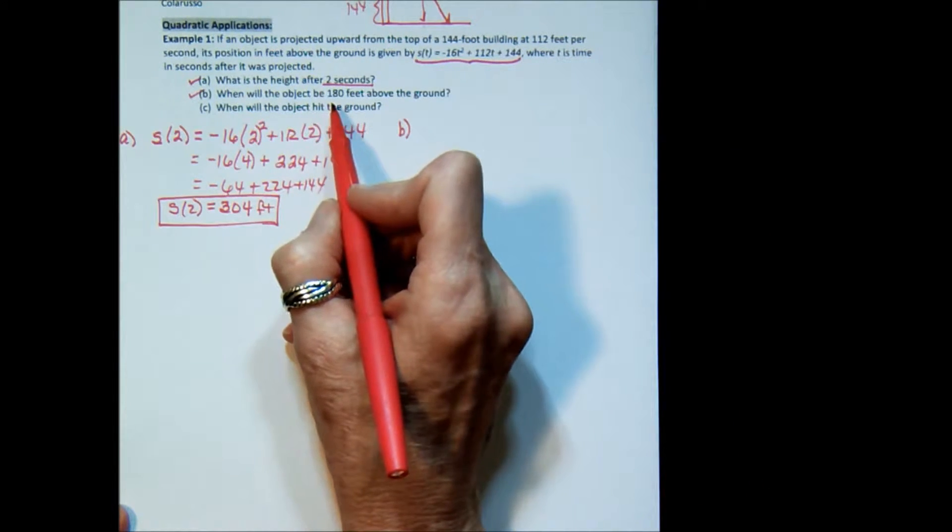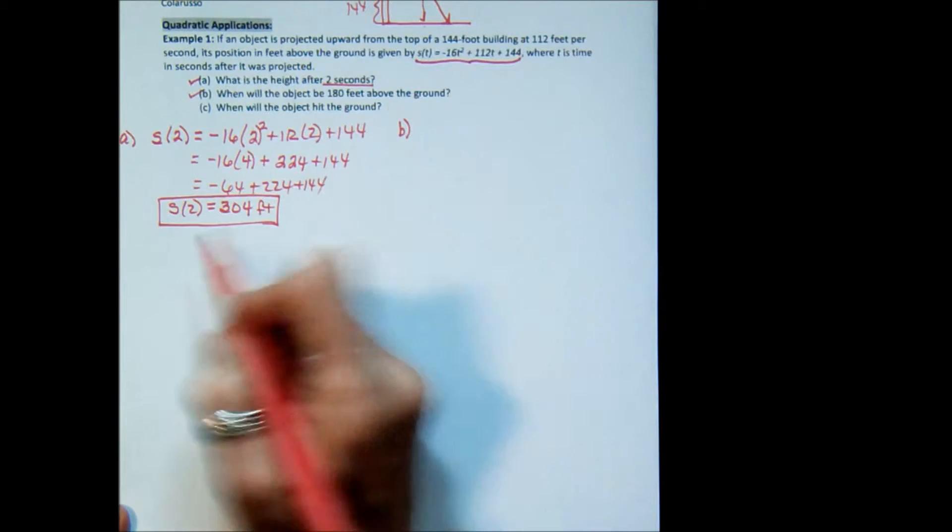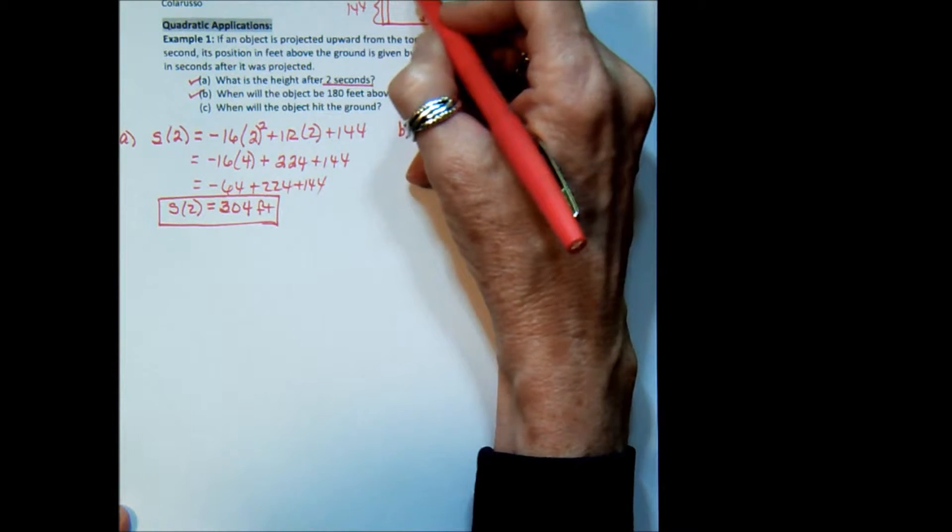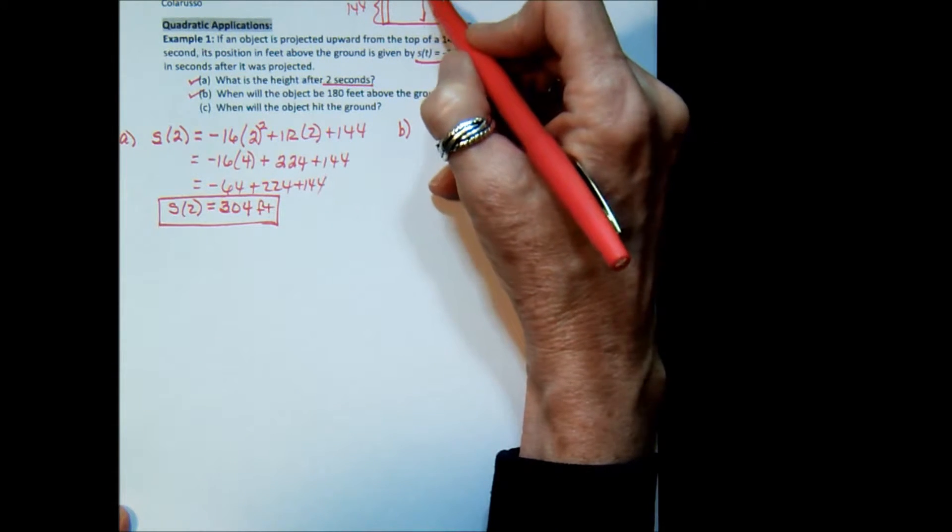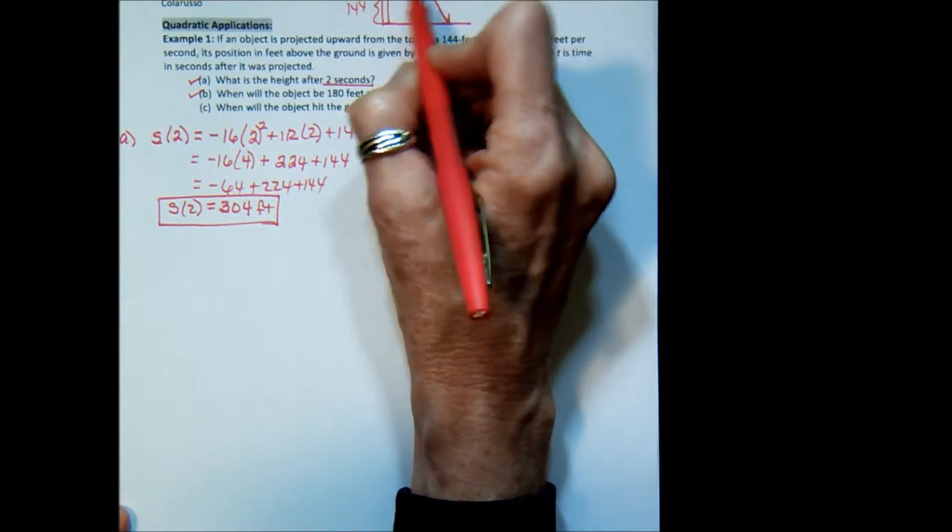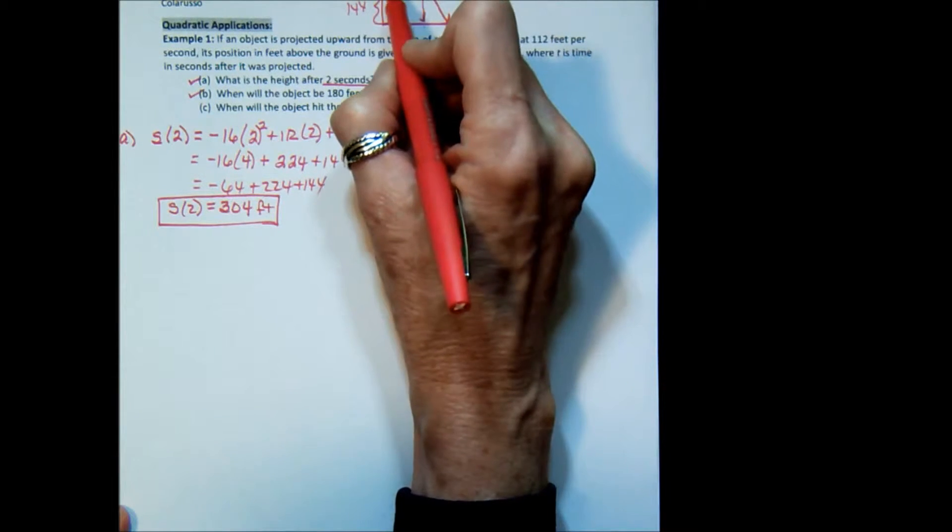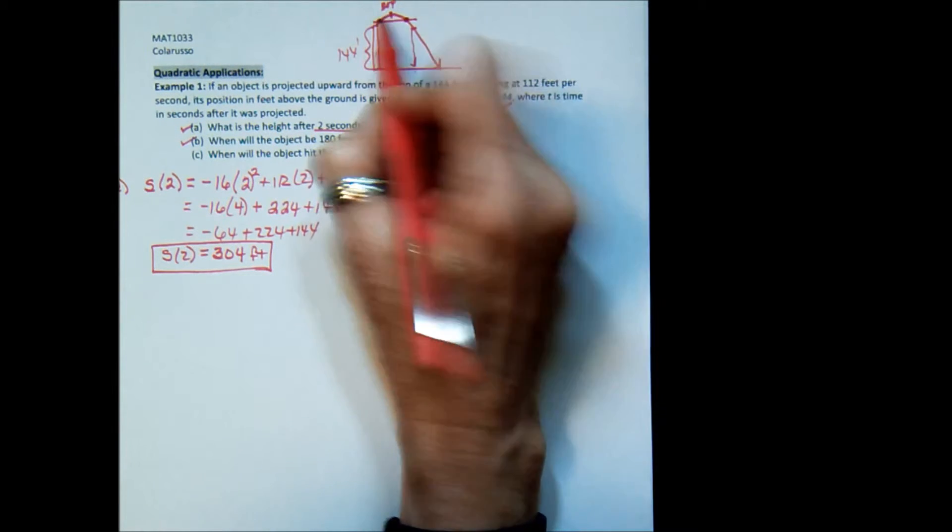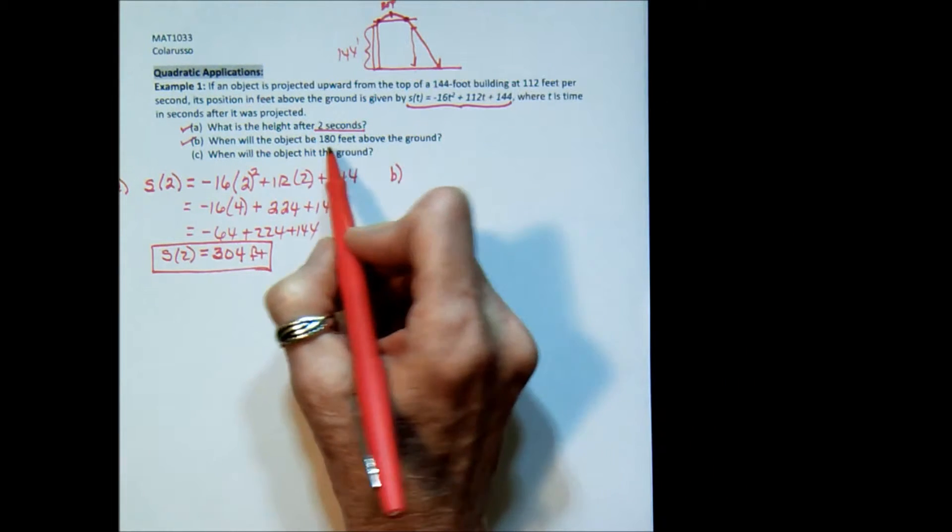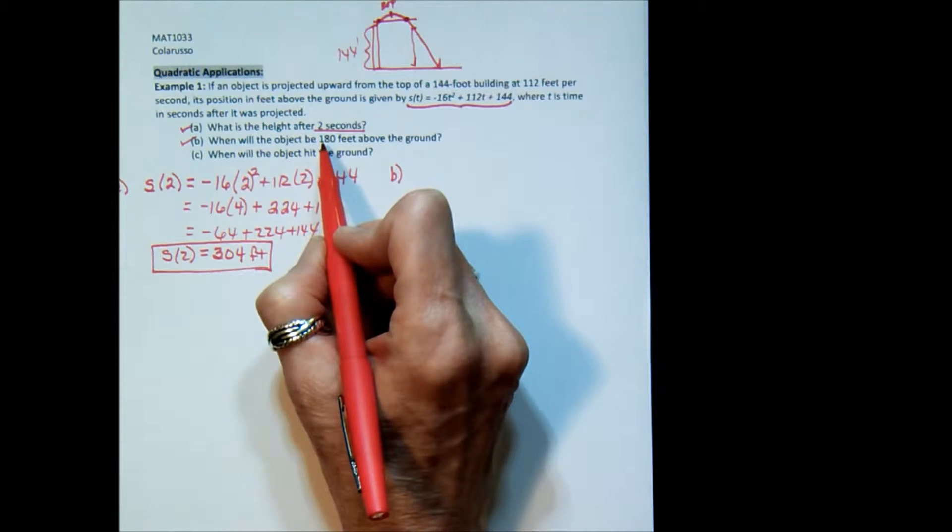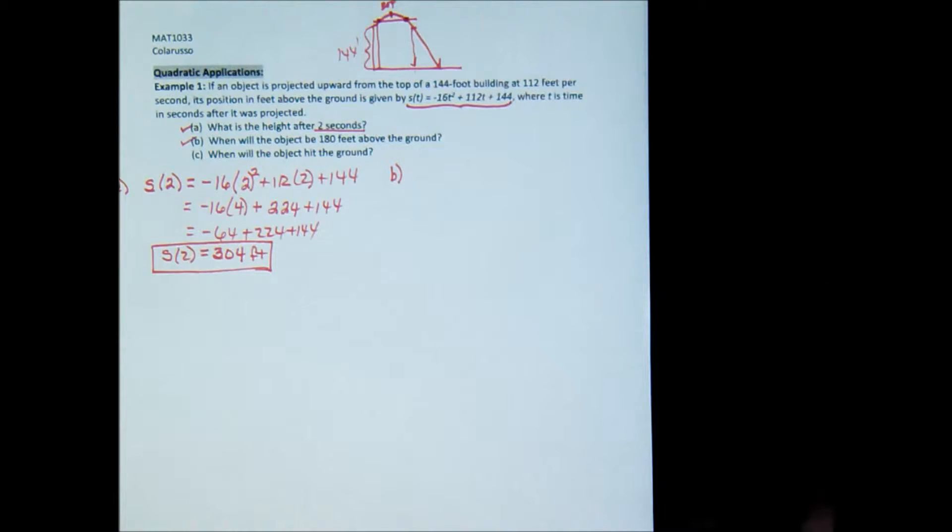When will the object be 180 feet above the ground? Well, we know that in two seconds, it's somewhere up here, it's at 304. So it must be coming back down. We want to know when it's going to be 180. Well, if this was 180 feet right here, you can see that it's going to hit that 180 mark two different times, here and here. And we also know that this time, we're not talking about plugging in time. We're talking about plugging in a height. Well, what part of our equation represents the height? It's this, the s of t.